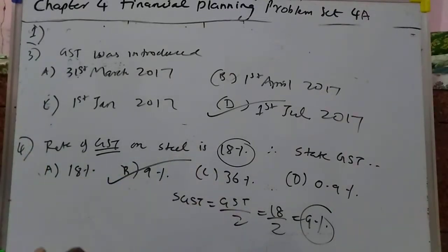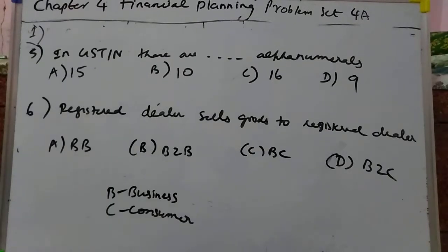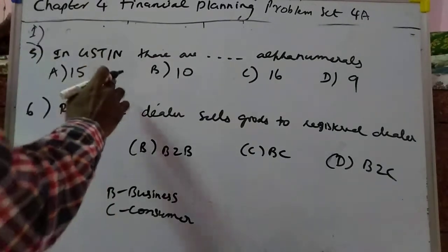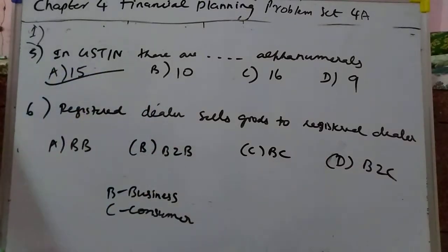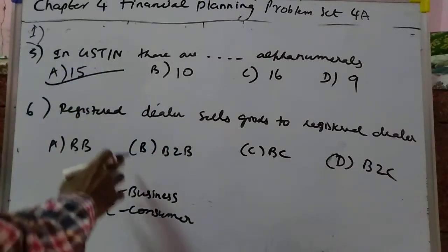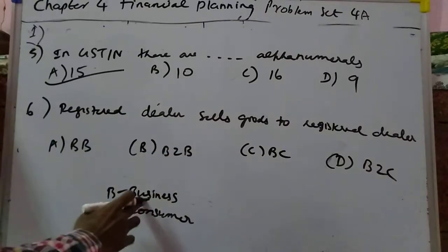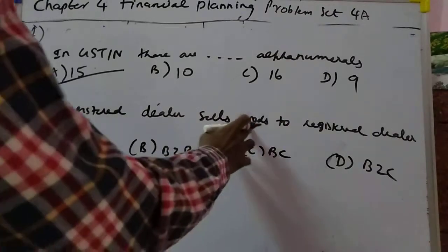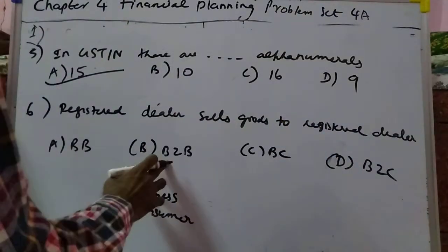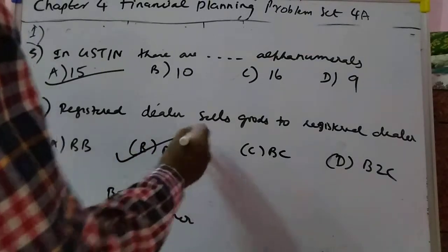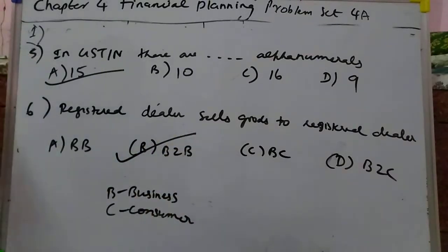Now let's do 5th and 6th. GST identification number has 15 digits. And here, Registered Dealer means business — selling goods to a Registered Dealer means business to business. You have to mark this.